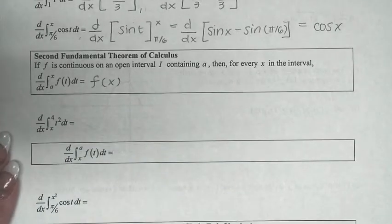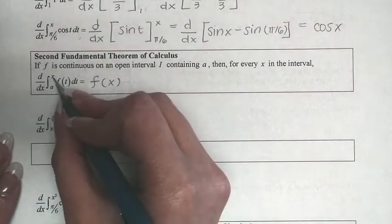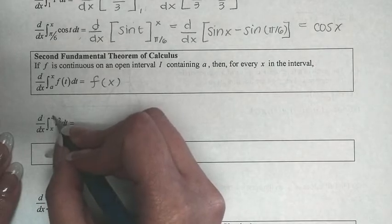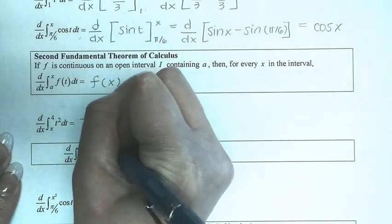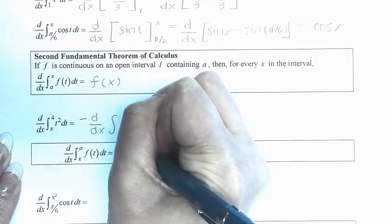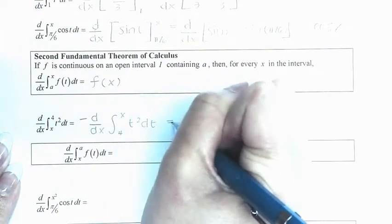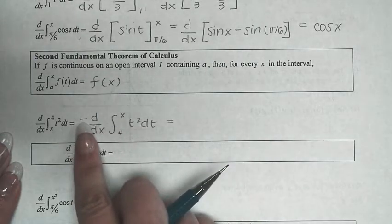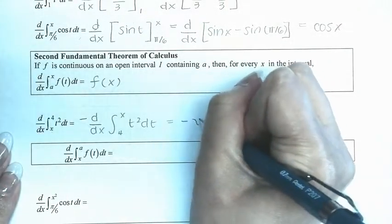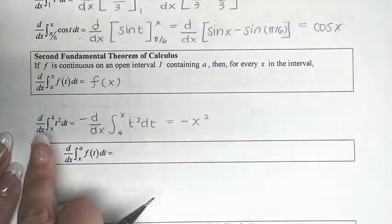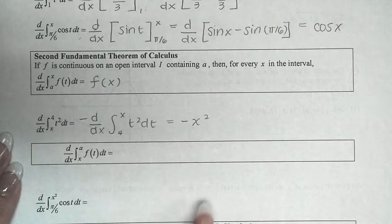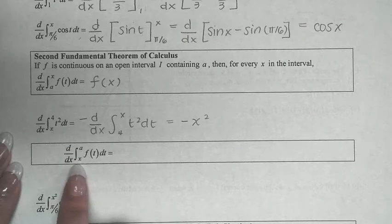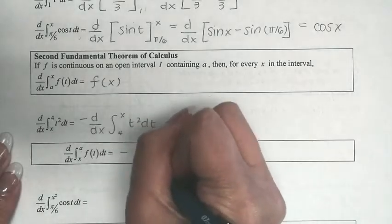What happens if x is on the lower bound instead of the upper bound? The first thing we need to do is make sure x is in the upper bound position. We put a negative in front to flip the order of the integral — this follows from the properties of integrals. Now the integral is in the correct form, and applying the second fundamental theorem of calculus gives us negative x squared. In general, the derivative with respect to x of the integral from x to a of f(t) dt equals negative f(x).